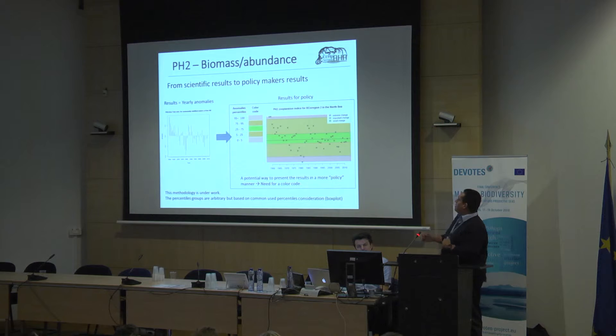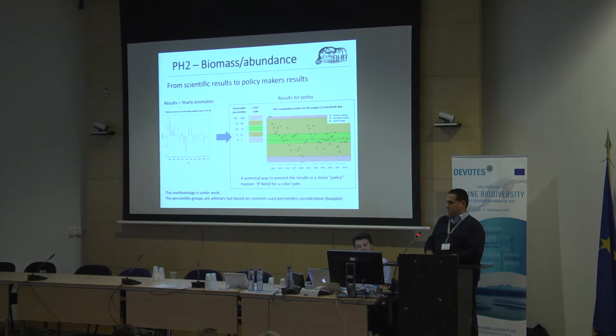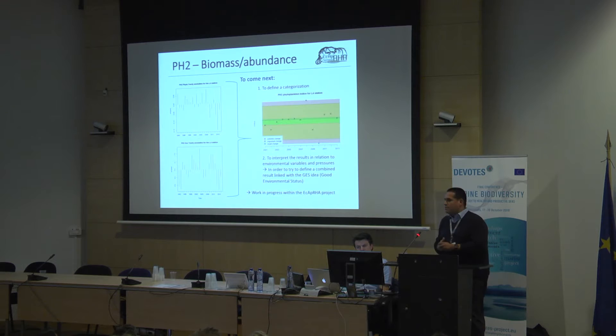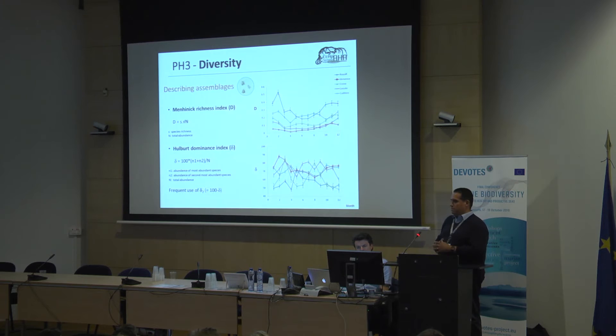A beneficial way is to present this with a color code with small changes, important changes, or extreme changes, based mainly on percentage consideration. We did the same work also with phytoplankton, and then we have a comparison between phytoplankton and zooplankton during the same years in terms of biomass and abundance. We also need to define a categorization, and now we need to interpret the results in relation to environmental variables and pressures.